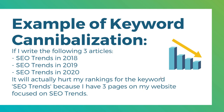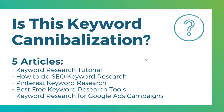So I'm going to go over how to fix this, but just in case there's any confusion, I'm going to give you a quick 'is this keyword cannibalization?' example. Let's say I have five separate articles on my website: a keyword research tutorial — a complete guide to keyword research — and then I also have SEO keyword research, Pinterest keyword research, best free keyword research tools, and how to do keyword research for Google Ads campaigns. So is this keyword cannibalization?